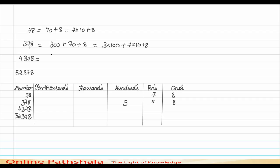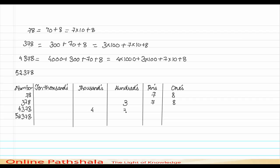Now let's take 4378. To write 4378, I need 4000 plus 300 plus 70 plus 8. The expansion would be 4 into 1000 plus 3 into 100 plus 7 into 10 plus 8. So in the table: 4 goes in the thousands place, 3 in the hundreds place, 7 in the tens place, and 8 in the ones place.